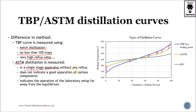ASTM, by contrast, uses a single-stage apparatus with no reflux. This does not indicate a good separation of components — the orange curve is not as clean as the blue one — and it represents operation far from equilibrium. In a real distillation column we try to operate near equilibrium to ensure material goes into the correct cuts. The main advantage of ASTM is that it is cheap and faster than TBP, and if you are just comparing raw materials, ASTM is sufficient.